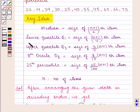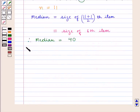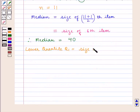Now, lower quartile Q1 is given by size of (n+1)/4 th item. That is, Q1 is equal to size of (11+1)/4 th item, which is equal to size of the 3rd item. From the series, the 3rd item is 25. Therefore, Q1 is equal to 25.